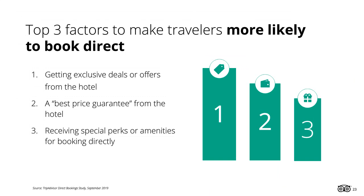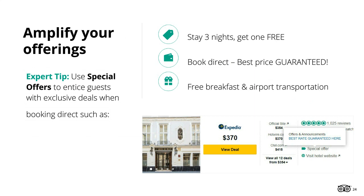We recently ran a direct booking survey to better understand travelers' booking behaviors. We found the top three factors that would make travelers more likely to book directly with a property are: getting exclusive deals or offers, a best price guarantee, or receiving special perks or amenities for booking directly. These are easy tactics for you to implement right away. On TripAdvisor, properties can highlight their special offers as part of their Business Advantage subscription. These offers are called out in search results and your listing page, linked directly back to your booking website. Travelers can also filter for properties with special offers, giving you another way to stand out.